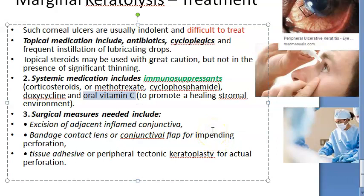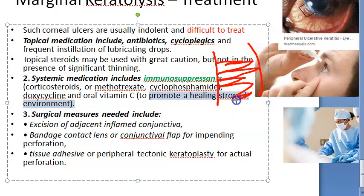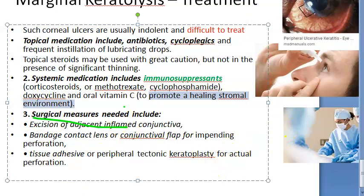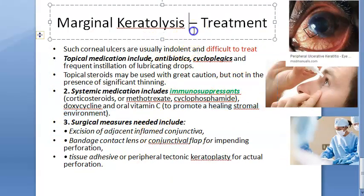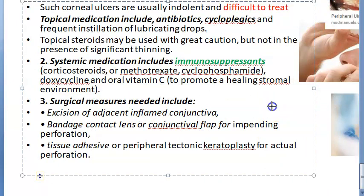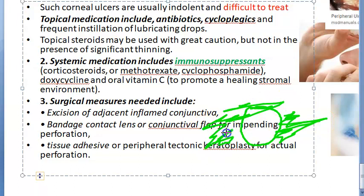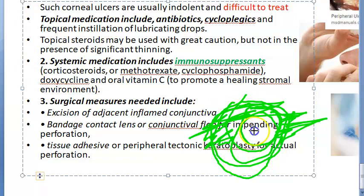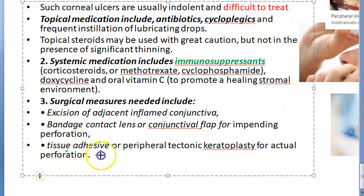Vitamin C is also given systemically — it promotes healing of the stromal environment of the cornea. The cornea has epithelium, basement membrane, stroma, and endothelium, and vitamin C promotes stromal healing. Doxycycline is also used systemically. Surgically, excision of the adjacent inflamed conjunctiva is performed, and bandage contact lenses may be applied. A conjunctival flap can be created in cases of impending perforation.